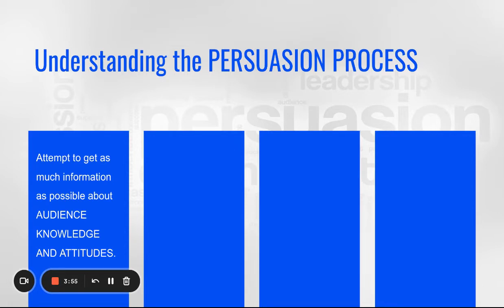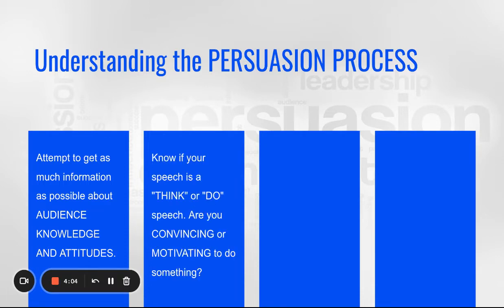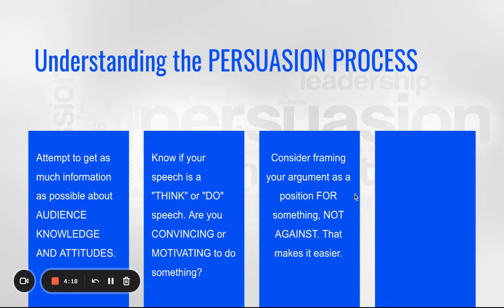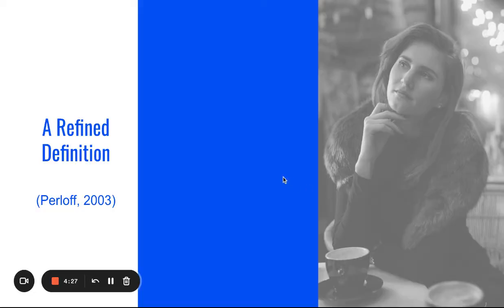When understanding the persuasive process, attempt to get as much information as possible about your audience, their knowledge, and their attitudes. Know if your speech is a think or do speech — are you convincing someone, motivating them to take action, or getting them to consider something? Consider framing your argument as a position for something rather than against, and phrase your proposition as clearly as possible.